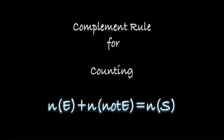Complement rule for counting: N(E) plus N(not E) equals N(S). The number of outcomes that are in an event, plus the number of outcomes that are not in the event, equals the number of total possible outcomes in the sample space.